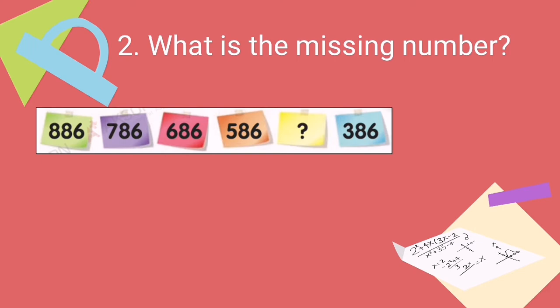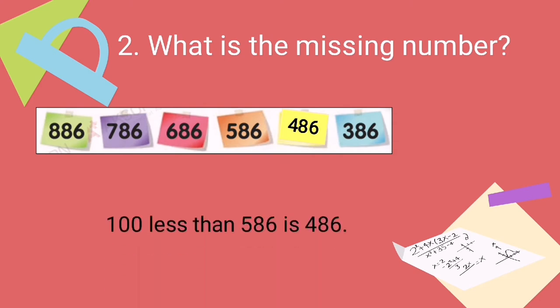Another example — what is the missing number? We have 886 and then the next number is 786. What do you notice? We subtract 100 each time. So 786 minus 100 is 686, then 586, and then what comes next?